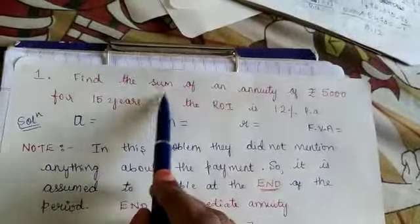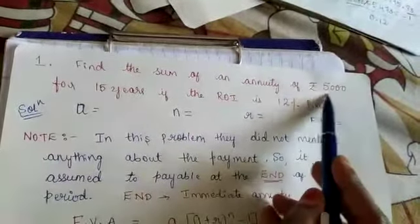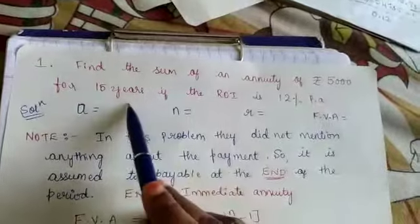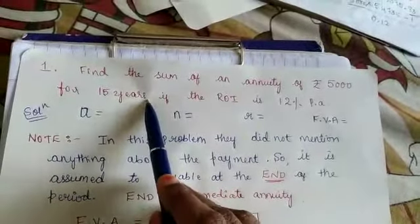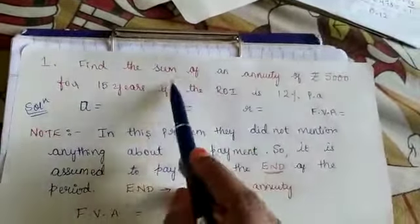Find the sum of an annuity - what does this mean? An annuity of Rs.5000 means each year you pay 5000 rupees for 15 years. After 15 years, what is the total amount? That is called finding the sum.